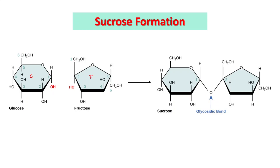In this case, we have glucose and fructose and glycosidic bond development is between carbon number 1 of glucose and carbon 2 of fructose here.